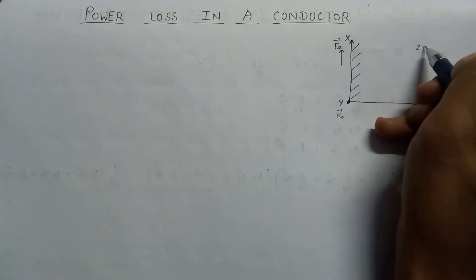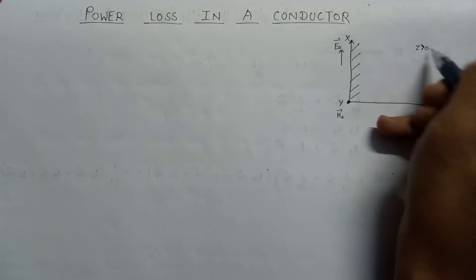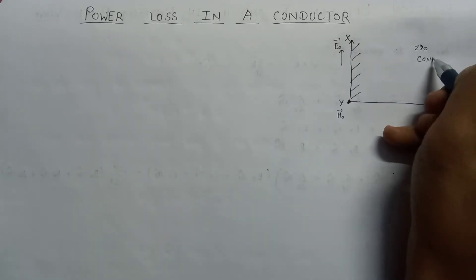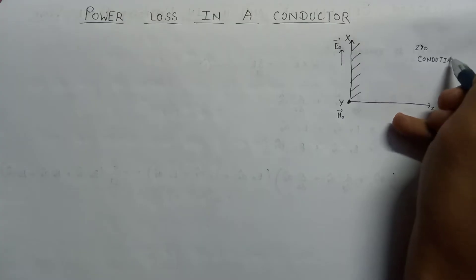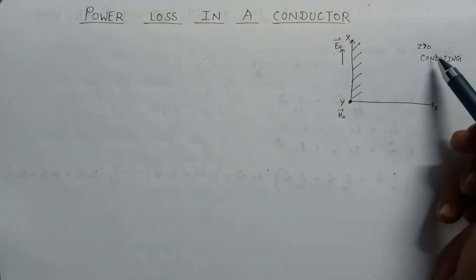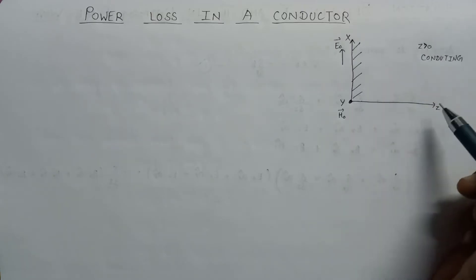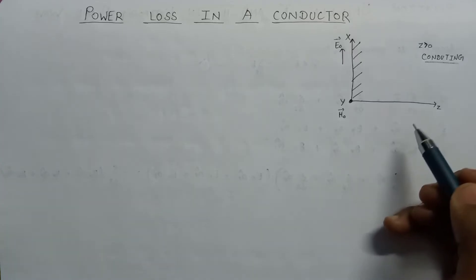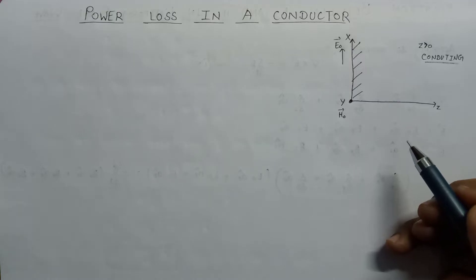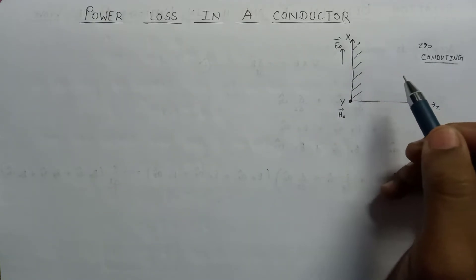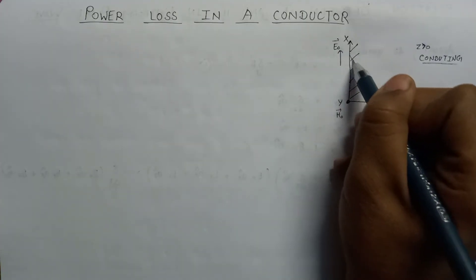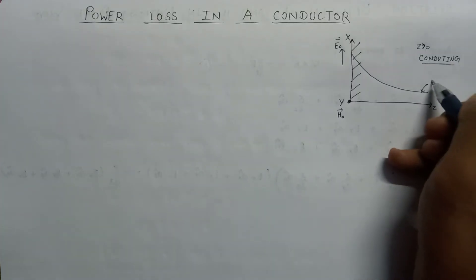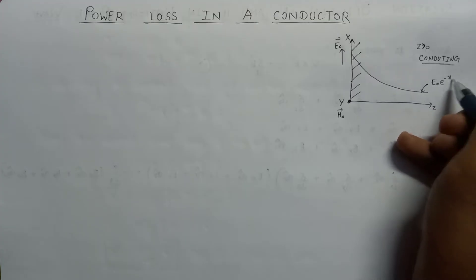For z greater than 0, this surface or medium will behave like a conducting medium, or a good conductor medium. The wave traveling inside this conducting surface will show an exponential behavior and decrease exponentially. This is the exponential behavior of the electric field, having the component E0 times e to the power minus gamma z.